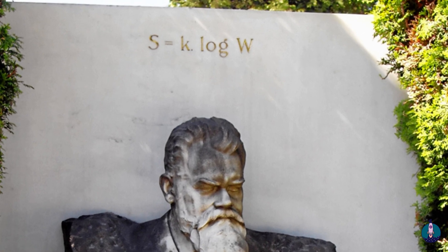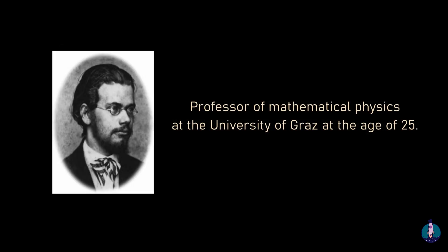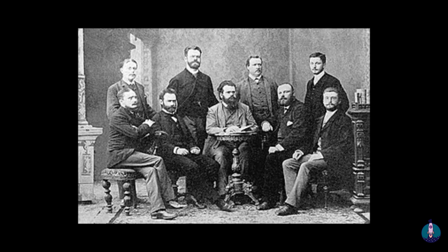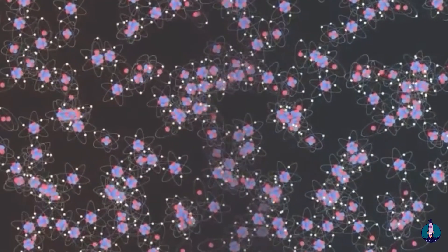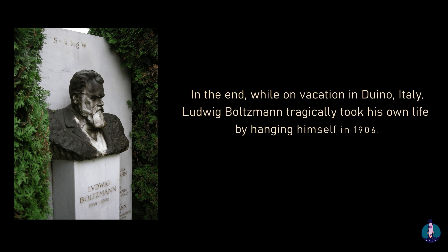Boltzmann's most famous equation, which captures the essence of entropy, is engraved on a stone in Vienna. His life was a blend of brilliance and struggle. Appointed as a professor at just 25, celebrated by emperors and yet often misunderstood by his peers, despite revolutionizing physics, his work faced strong opposition, leaving him caught between moments of triumph and deep despair. In the end, while on vacation in Duino, Italy, Ludwig Boltzmann tragically took his own life by hanging himself in 1906.